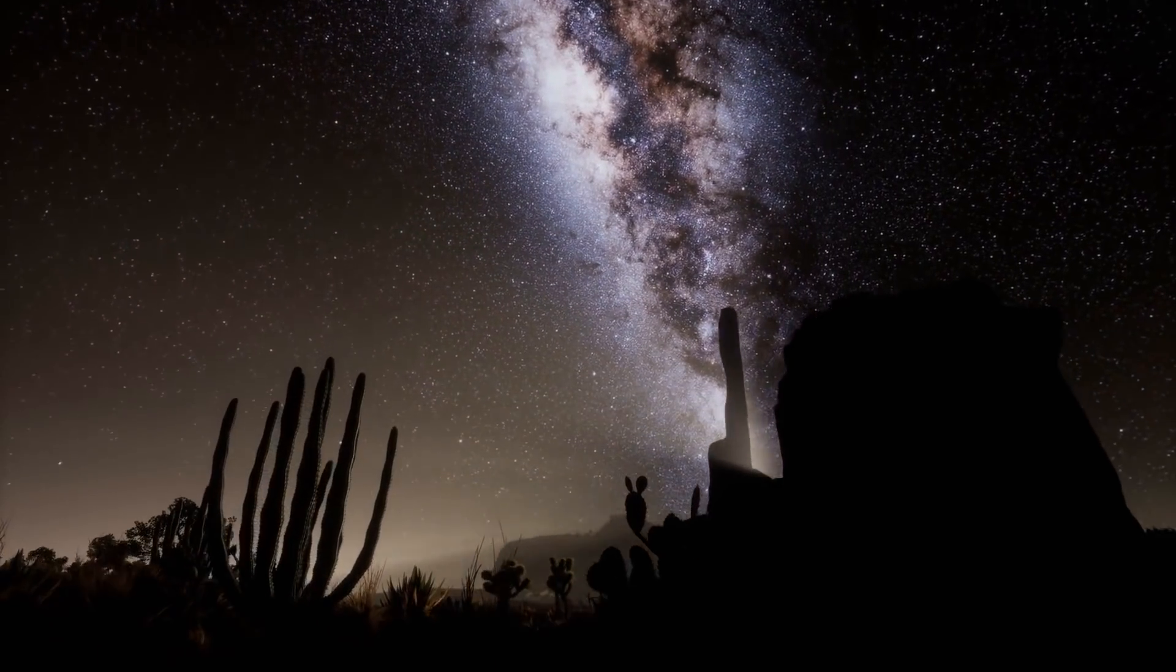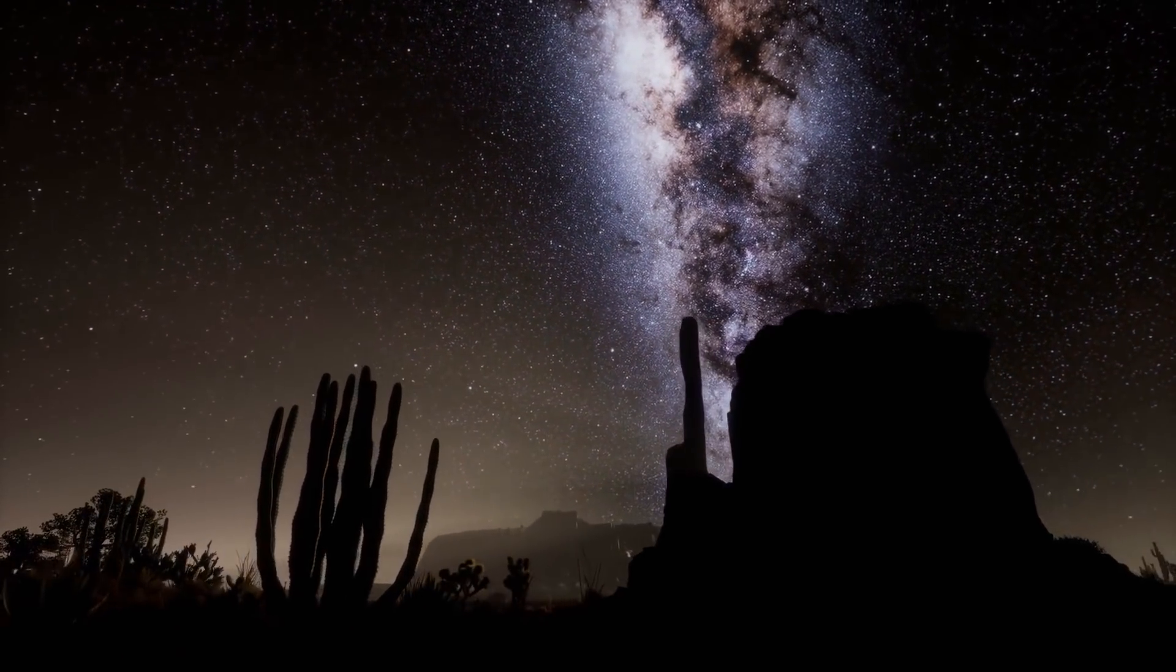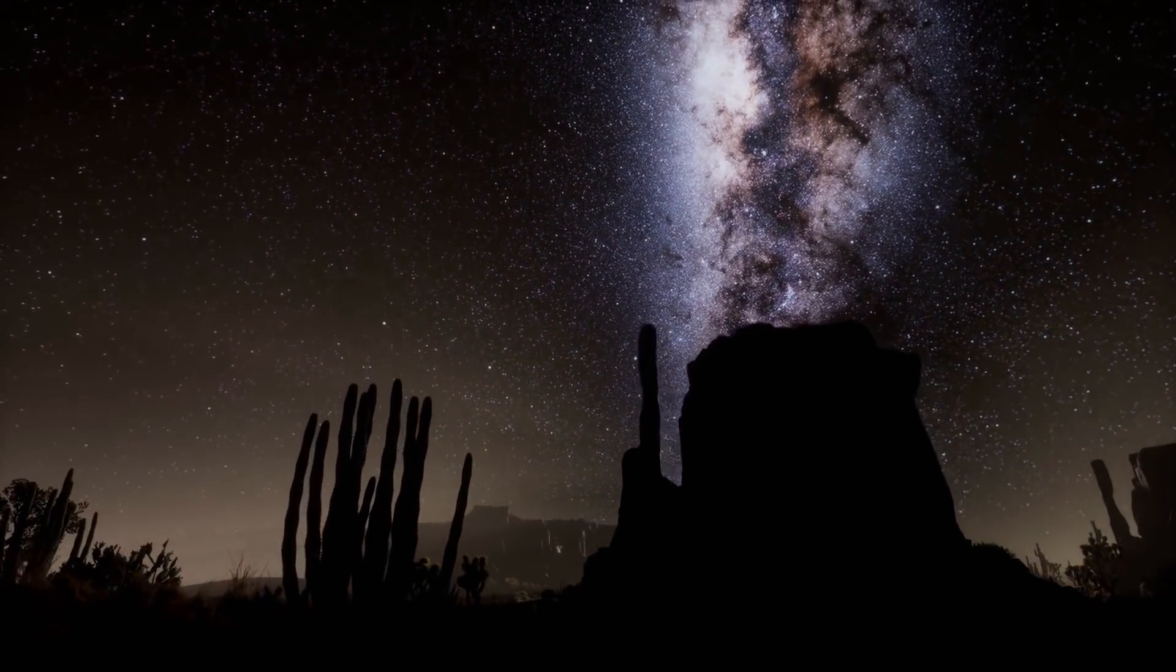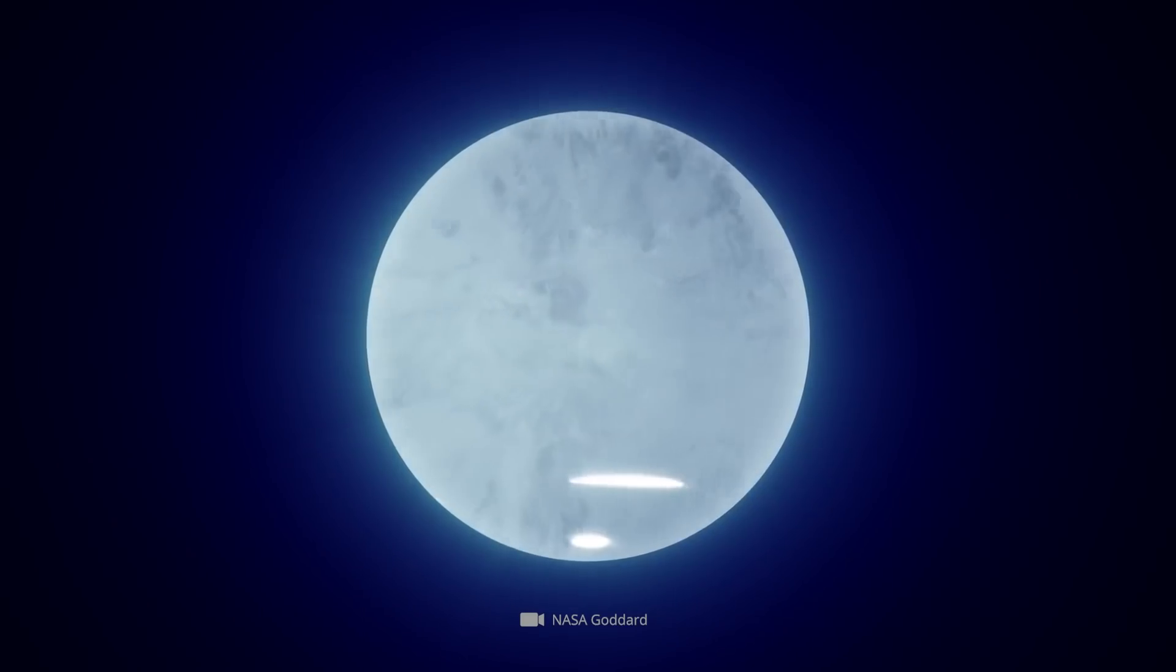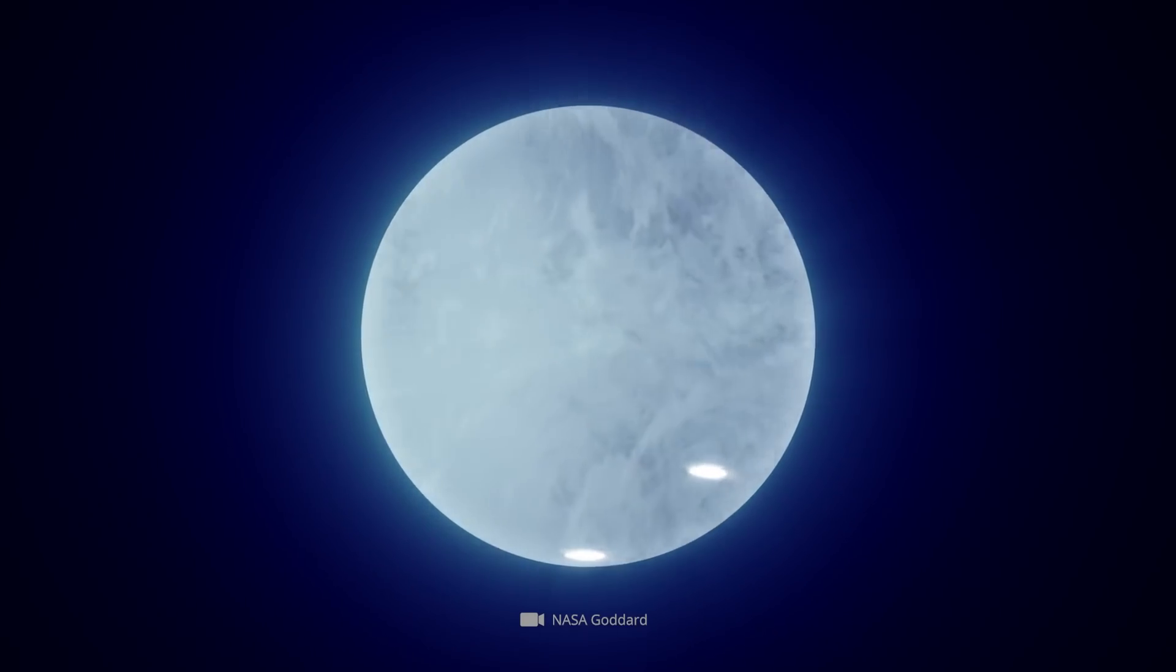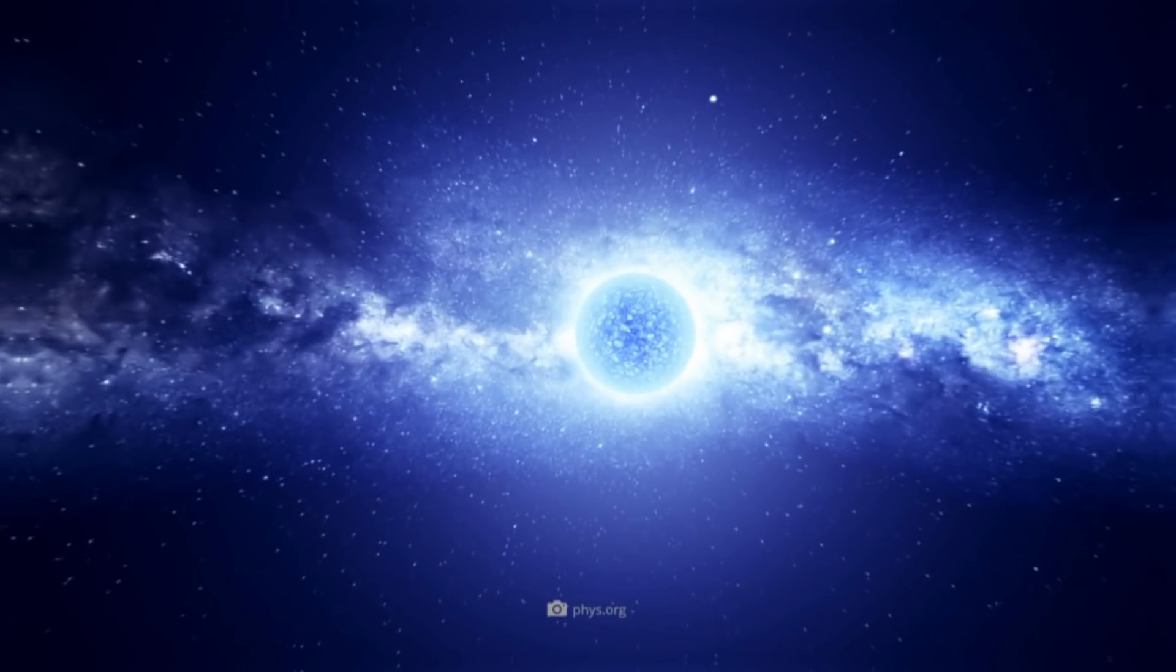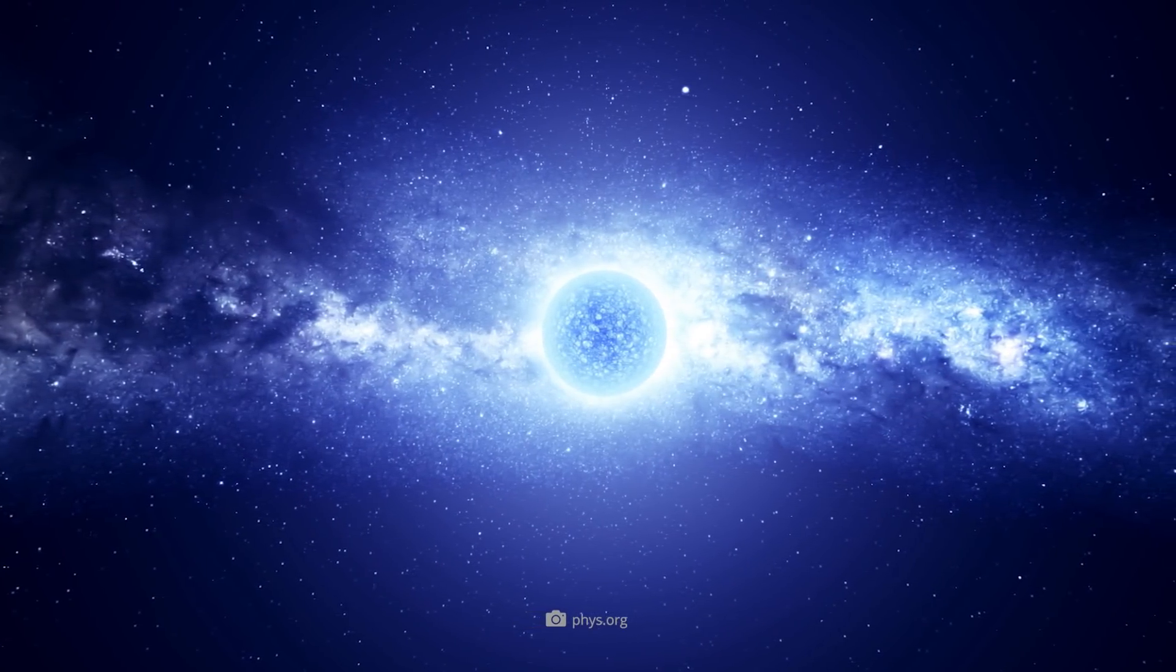In this way, the scientists were able to determine the true size of the pulsar under study with unprecedented accuracy. During their observations, the experts determined that J0030 has 1.3 to 1.4 times the mass of the sun.